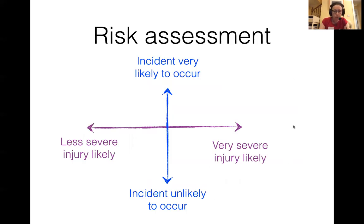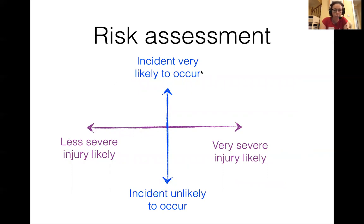For risk assessment we'll usually use a matrix. First, how likely is it that something harmful could happen - either very likely to occur at the top, or not so likely at the bottom. Then, if it was to occur, what would the outcome be - something likely to result in a mild or less severe injury on the left, or a very severe injury on the right. That gives us four sectors.